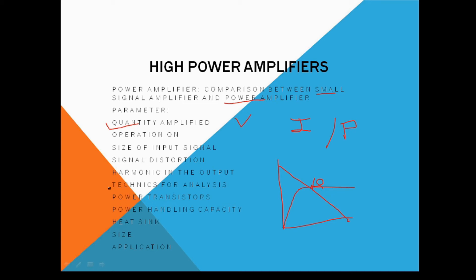The next parameter is the technique for analysis. In the case of the small signal amplifier, analysis is done on the basis of H parameters, which we have already discussed in the first unit. For the power amplifier, analysis is done only by using graphical techniques. Regarding power transistors: in the case of the small signal amplifier, power transistors are not used — simple transistors are used. But in the case of the power amplifier, power transistors are used. Regarding power handling capacity: for the small signal amplifier it is very low, but for the power amplifier it is very high.